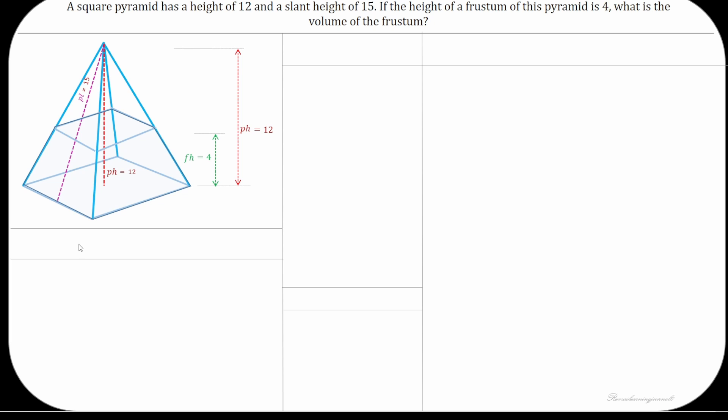The formula for volume of the frustum is 1/3 times height of the frustum times sum of lower and upper base areas plus square root of product of lower and upper base areas. The height of the frustum is already given in the problem and we need to find the lower and upper base areas.